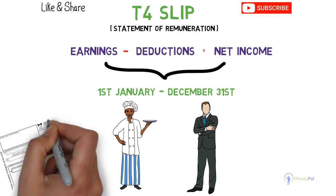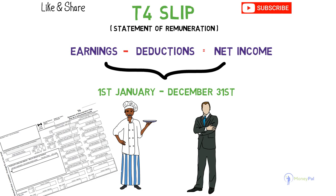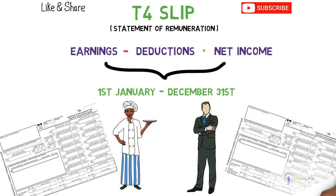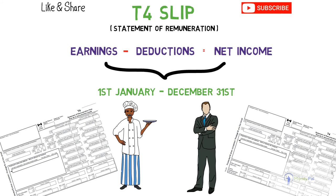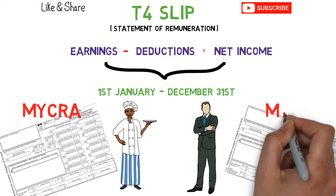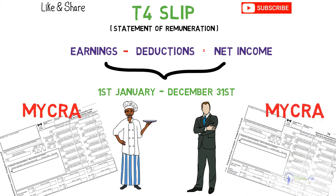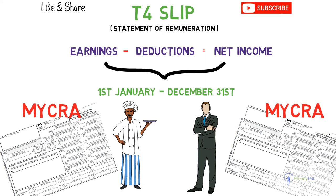You should expect to receive a T4 by the end of February or the first week of March. If you have worked for multiple employers during the year, expect a separate T4 for each one of them. If you don't receive one, ask your employer for a copy. These T4s are also submitted to the CRA by your employer directly, and for your convenience, you could also visit the myCRA account to get a copy of the same.